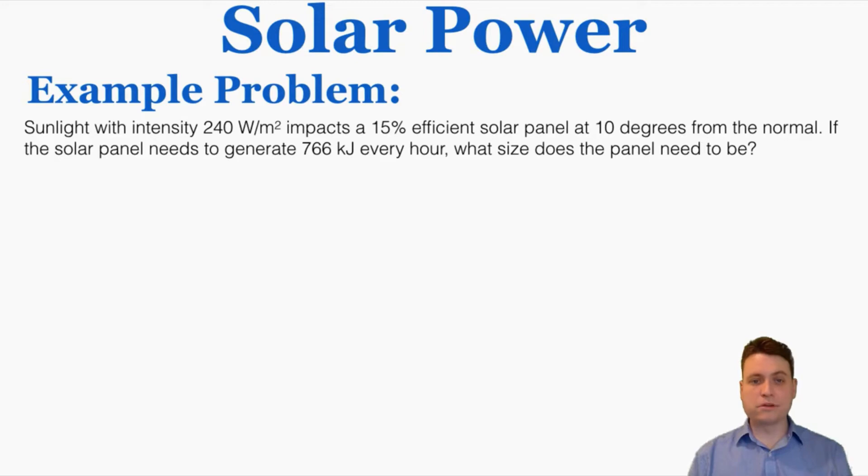Here's a quick example problem to close the video. Sunlight with intensity of 240 watts per meter squared impacts a 15% efficient solar panel at 10 degrees from the normal. If the solar panel needs to generate 766 kilojoules every hour, what size does the panel need to be? I'm going to start by working out how much intensity we can actually get out of the solar panel given its efficiency and its angle.